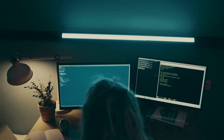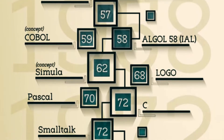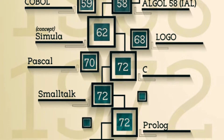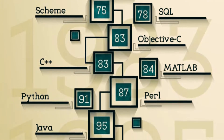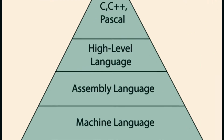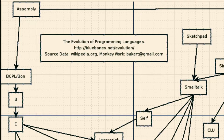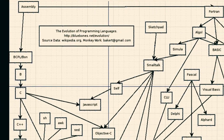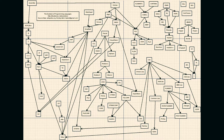After Assembly was created in 1947, many of the foundational programming languages were built: Fortran, Autocode, Algol, COBOL, BASIC, Pascal, C, and SQL — all dating back before 1975 and building what we know as high-level programming languages. Their principles were later designed and modified with newer programming languages like Java, Python, Ruby, C++, PHP, C Sharp, JavaScript, and so many more.